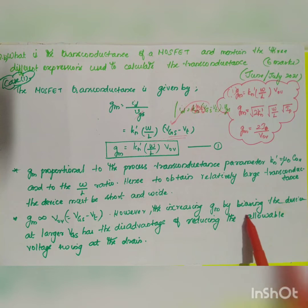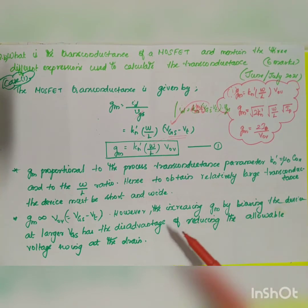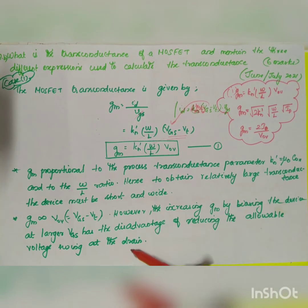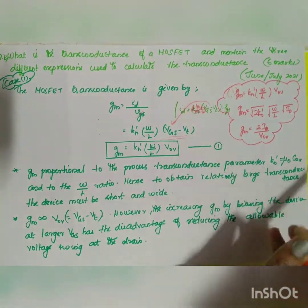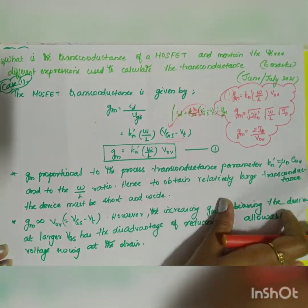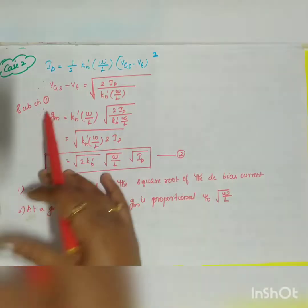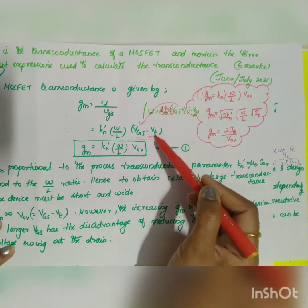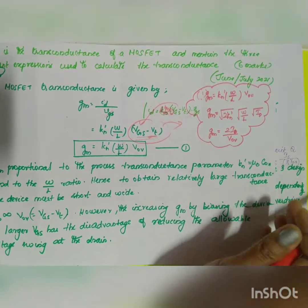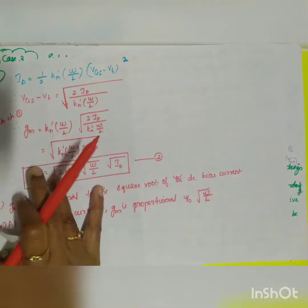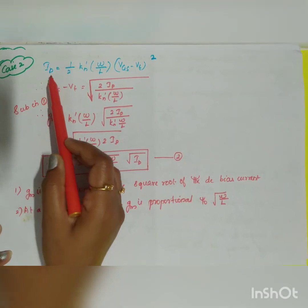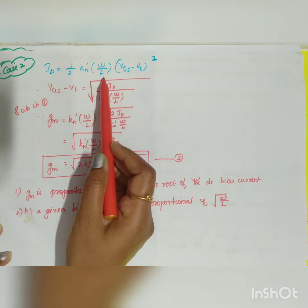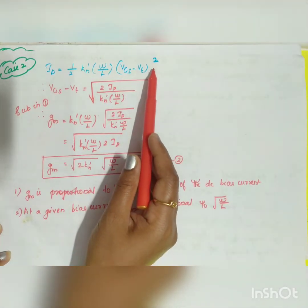However, increasing GM by biasing the device at a larger VGS has the disadvantage of reducing the allowable voltage swing at the drain. For Case 2, we substitute for (VGS − VT) in terms of ID. We know the DC drain bias current: ID = (1/2) × KN' × (W/L) × (VGS − VT)².